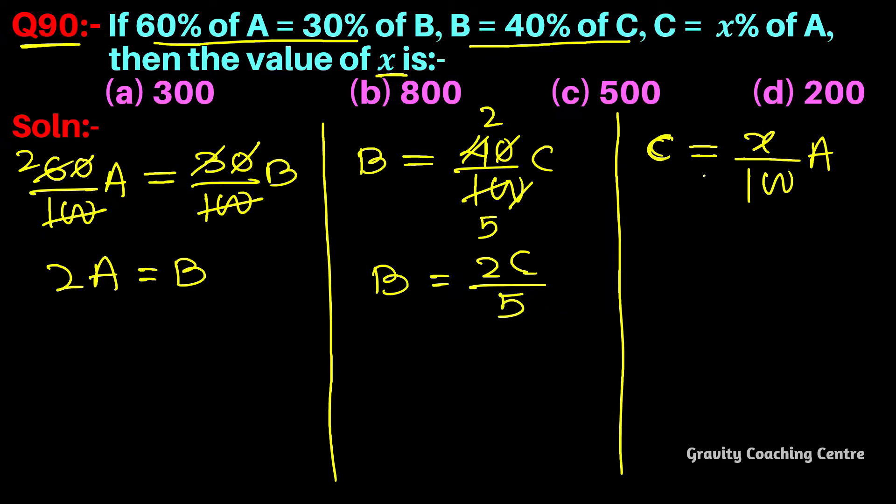Then we'll move on to A and C value to substitute this, so it will be solved here. A will be B by 2, and here C will be 5B upon 2. And this is C value: 5B upon 2.